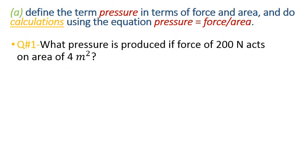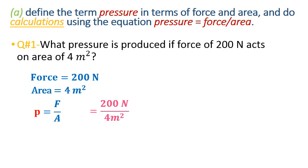Once we have understood the pressure formula which is force upon area, it's time to do some calculations. What pressure is produced if force of 200 newton acts on an area of 4 meter square? This is the data given and we simply apply our formula and put in the values which is pressure equals force upon area and we get our answer which is 50 newton per meter square. If we convert our answer, it will be equivalent to 50 Pa.